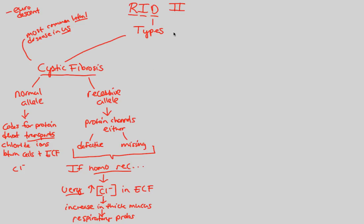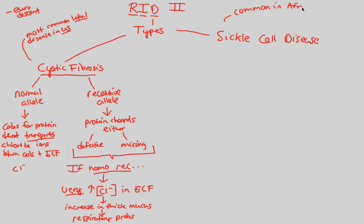In the next part, we're going to talk about a different type of recessively inherited disorder called sickle cell disease — or sickle cell anemia, as some people say — but we'll call it sickle cell disease to be more general. This is most common in people of African descent, whereas cystic fibrosis was common in European descent. It's a much bigger deal in Africa, and we'll see why. I'll give you a basic background of sickle cell disease, and we'll look at more of the genetic implications in the next flowchart.